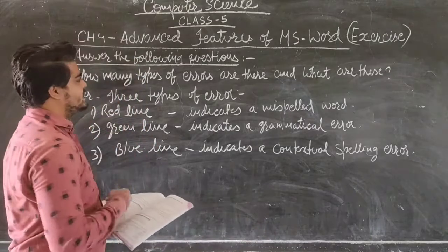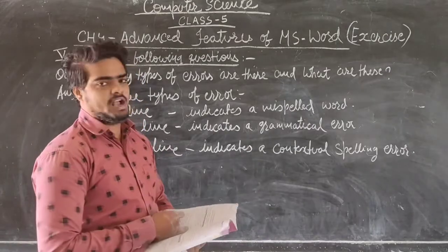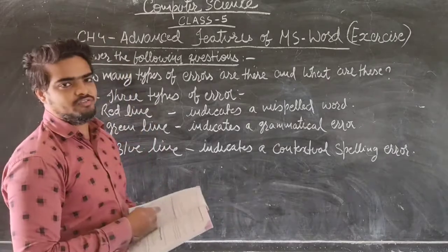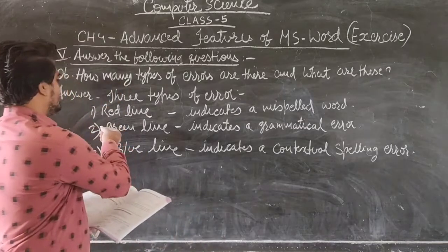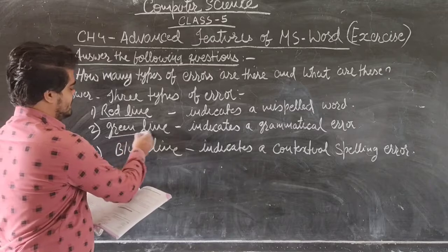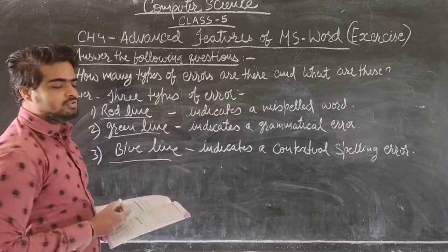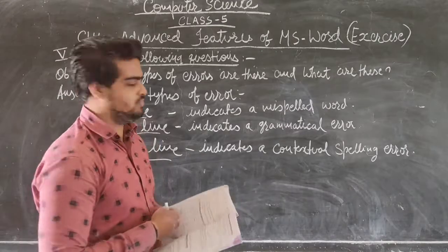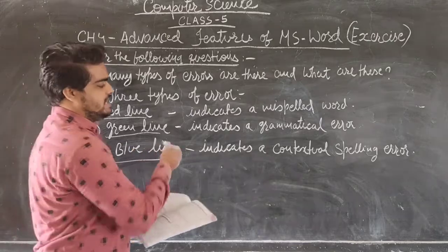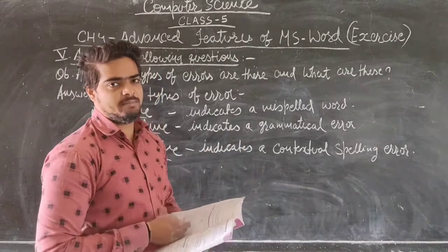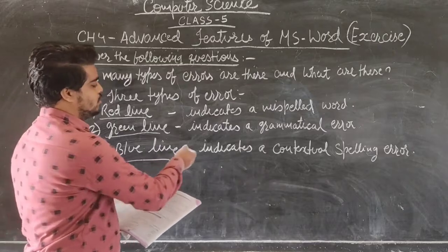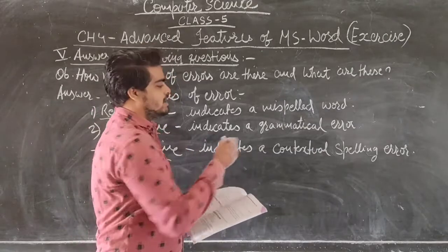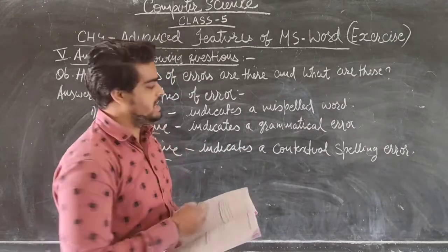Now question six — how many types of errors are there and what are they? There are three types of errors in MS Word. First is the red line, which indicates a misspelled word. Second is the green line, which indicates a grammatical error. Third is the blue line, which indicates a contextual spelling error in MS Word.